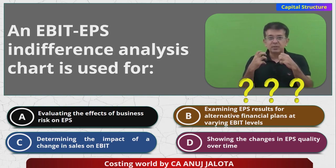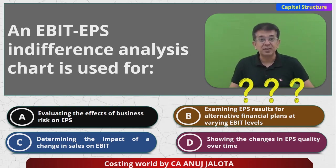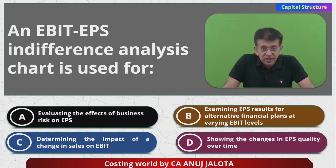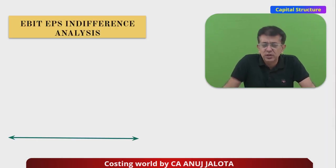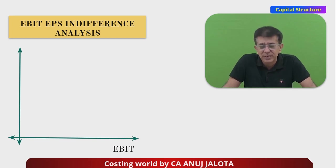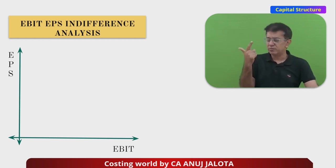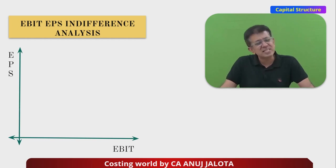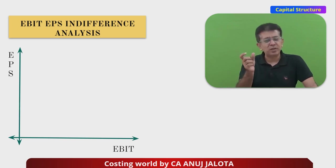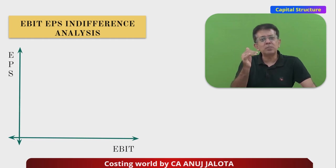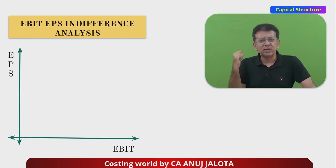Companies prefer that option of raising money where EPS is higher. You can either solve it algebraically to get the indifference point, or you can make a graph. On the x-axis, plot EBIT; on the y-axis, plot EPS. You'll have two lines — one for Plan One and one for Plan Two. Take any level of EBIT, work out the EPS under that plan, take another level and get another EPS, keep getting points, and join them to form a line.